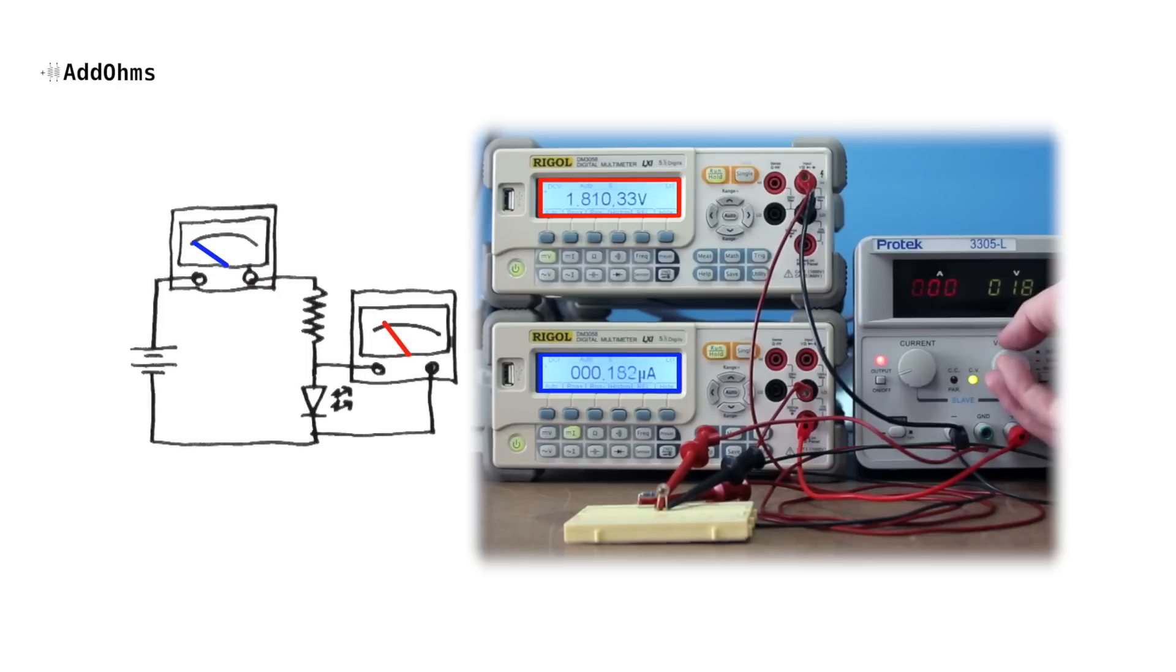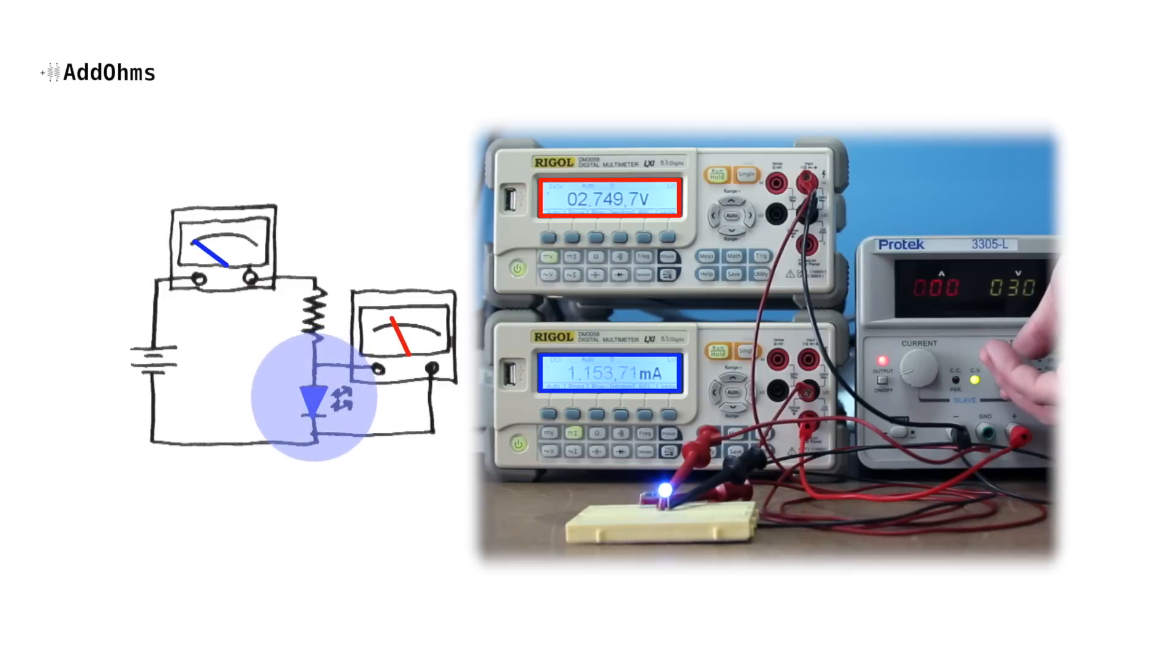When the supply gets close to 3 volts, the LED suddenly turns on with some blue light because it's letting current flow. If we keep going to 5 volts, the voltage across the LED changes a little bit, but not a whole lot. It's still about 3 volts.